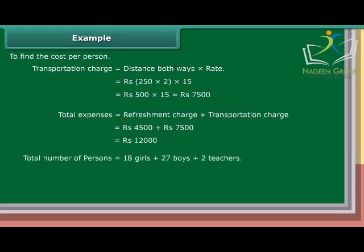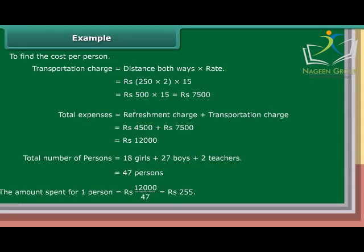Total number of persons equals 18 girls plus 27 boys plus 2 teachers, which equals 47 persons. The amount spent for one person is equal to Rs. 12,000 upon 47, which is equal to Rs. 255.